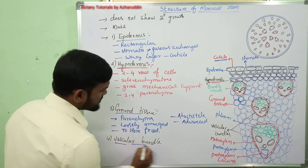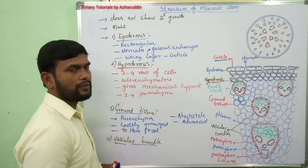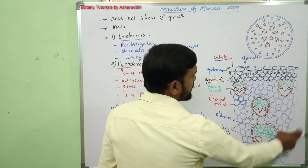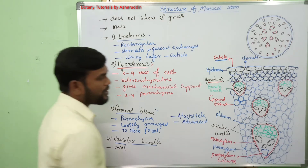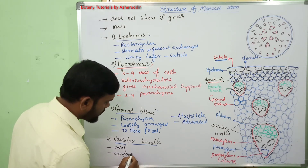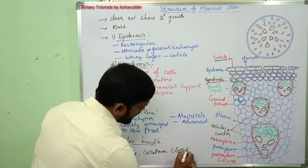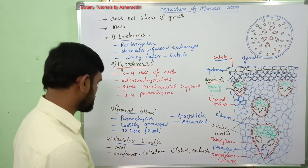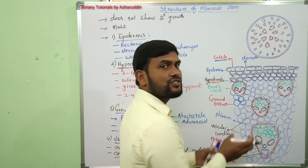The fourth part is vascular bundles. The vascular bundles are scattered in the ground tissue and are generally oval shaped. The vascular bundles are conjoint, collateral, closed, and endarch bundles.